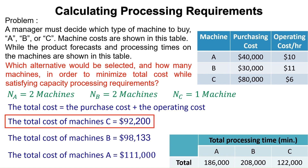Since machine C has the lowest total cost, we should buy one of the C machines in order to minimize the total cost.